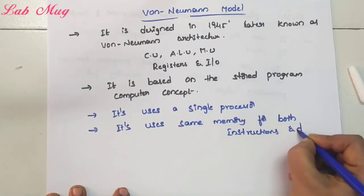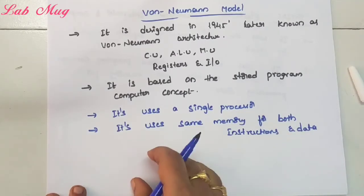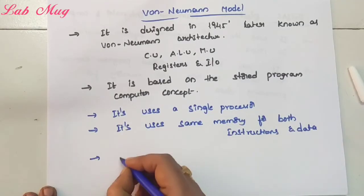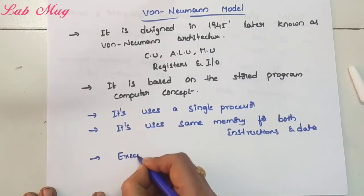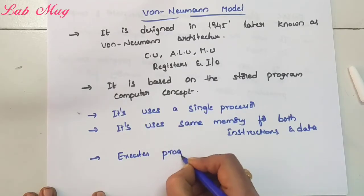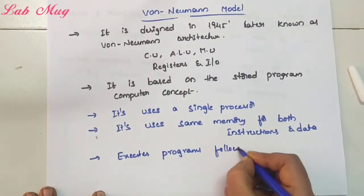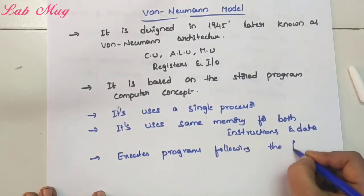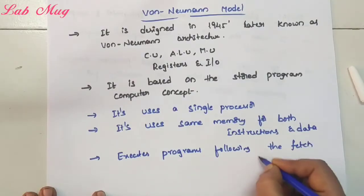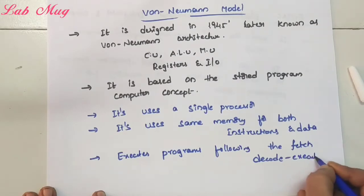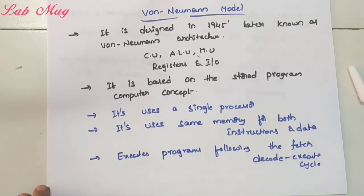In the Von Neumann model, the computers use only a single processor. For memory, both instructions and data are stored in the same memory — this is a very very important point in the Von Neumann model. Programs are executed following the fetch-decode-execute cycle.